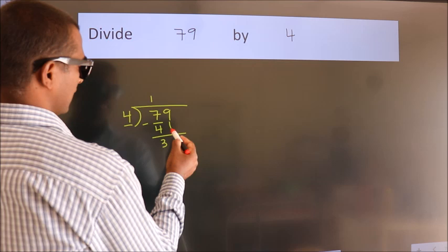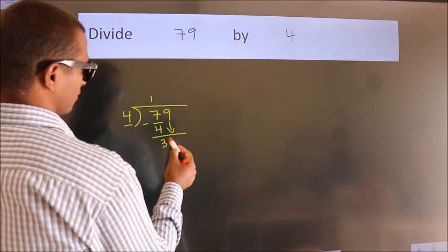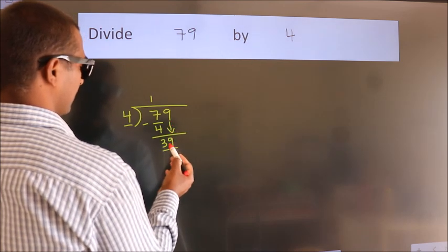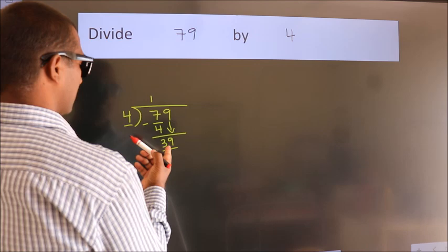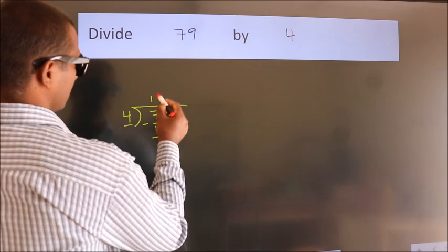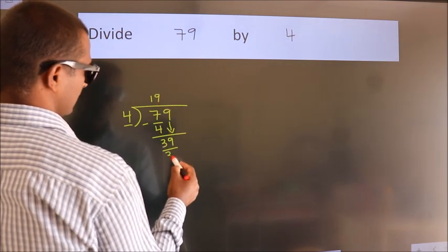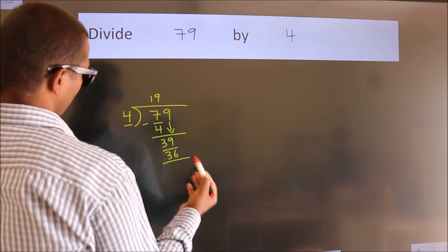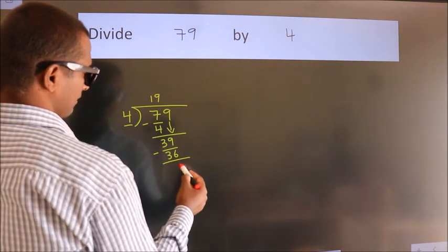After this, bring down the next number, 9. So we have 39. A number close to 39 in the 4 table is 4 nines, 36. Now we subtract and get 3.